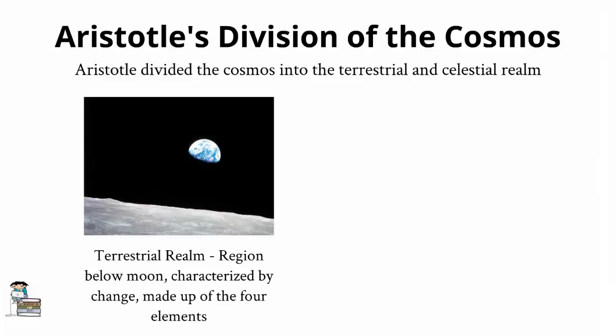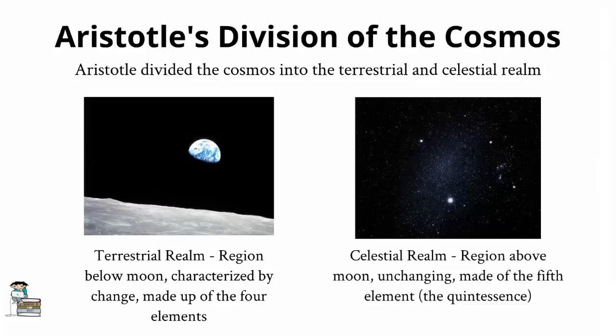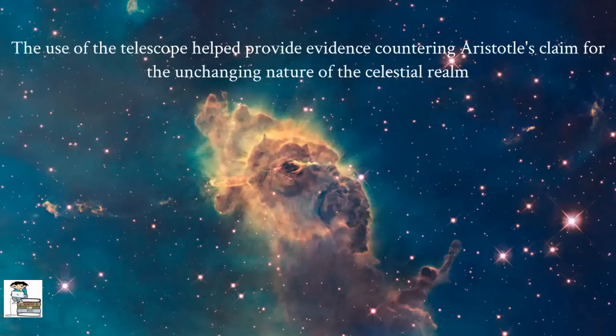The celestial realm, on the other hand, the region above the moon, included all the stars and planets, and was seen as unchanging and composed of a fifth element. However, with the growing use of the telescope during the scientific revolution, astronomers found increasing evidence that countered Aristotle's claim that the celestial realm was unchanging.